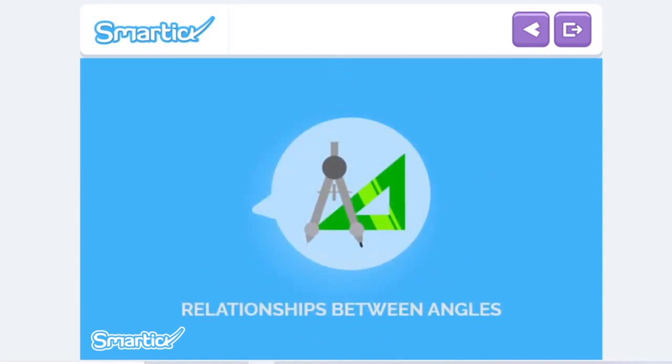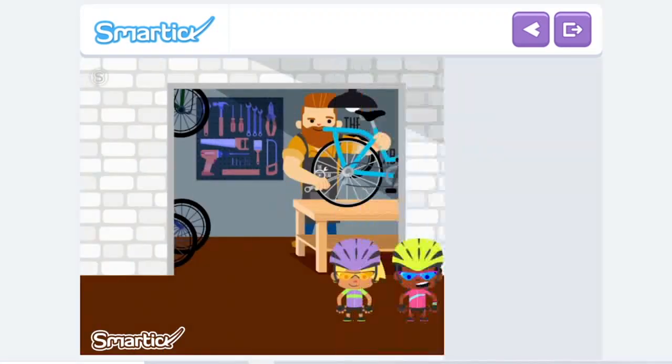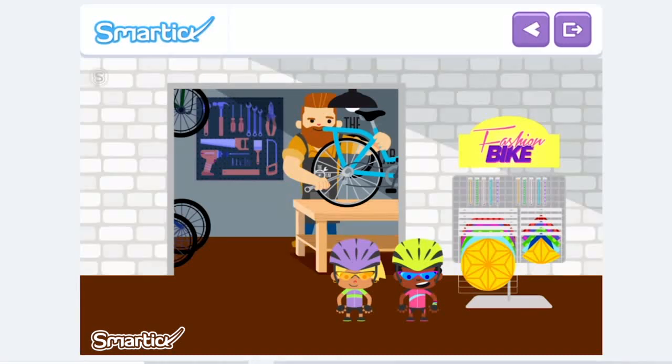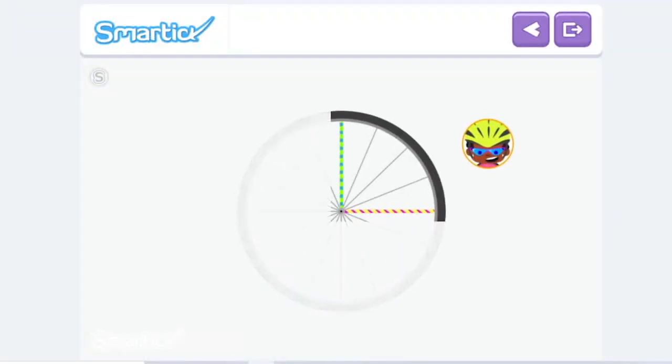Relationships Between Angles. Eva and Zoe are going to the bike store. While they wait for the mechanic to look at their bikes, they are picking out decorations for their wheels. They start with the front wheel on Zoe's bike. There are two spokes in the form of a right angle that are decorated. Now they want to fill the space between them. Let's help them.